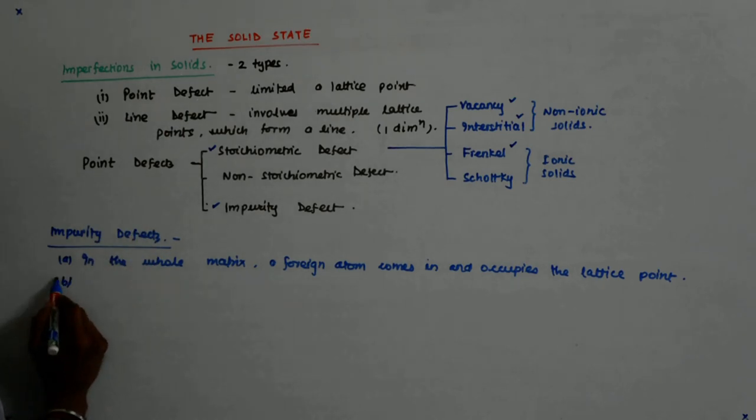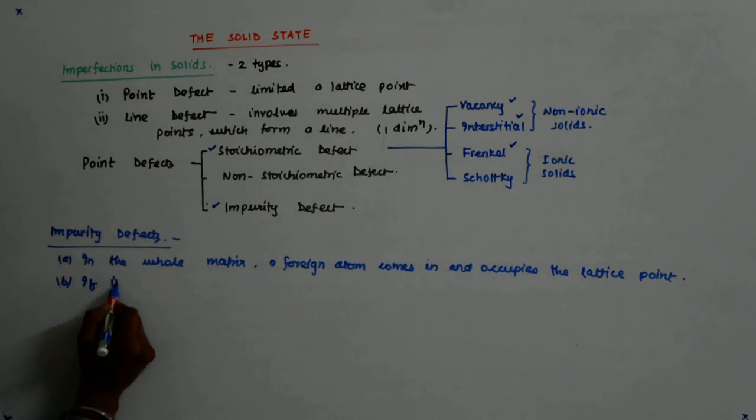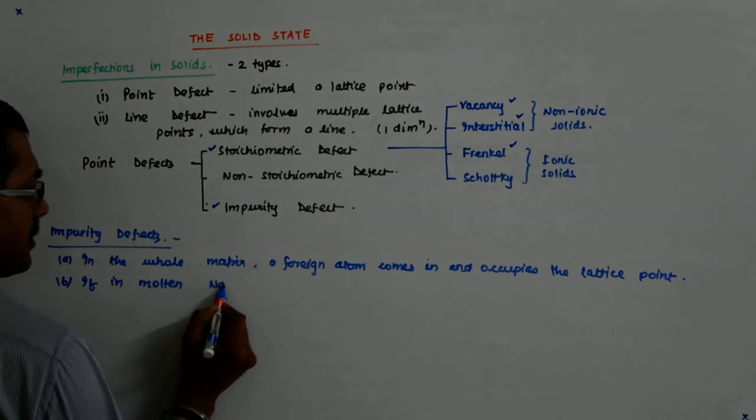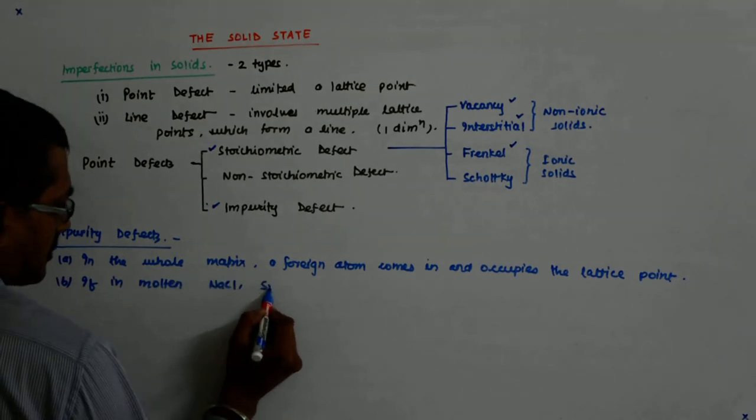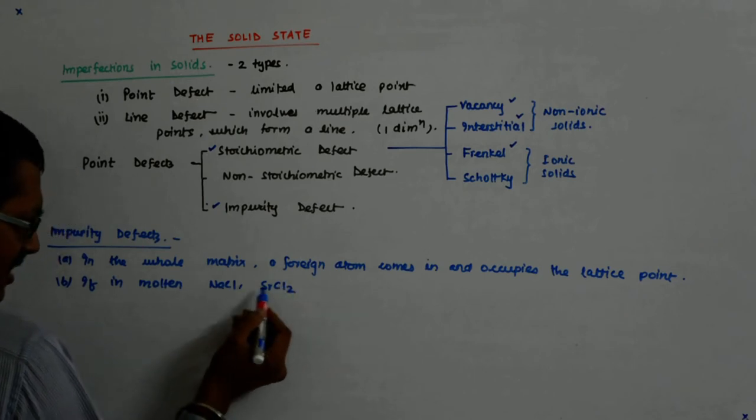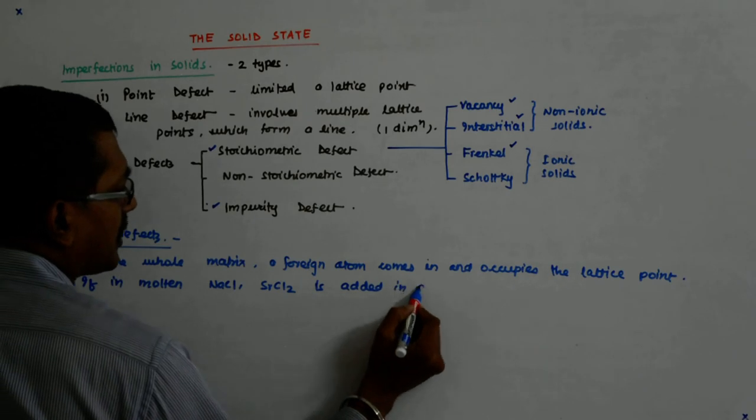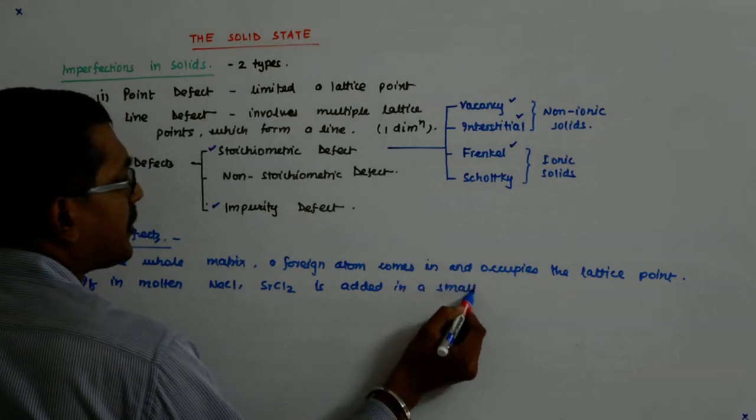Let us see by an example. If in molten NaCl, strontium chloride, SrCl2, is added in a small amount, then what will happen?